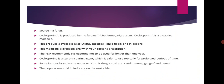The source of Cyclosporine is a fungus. Cyclosporine A is produced by the fungus Trichoderma polysporum and is a bioactive molecule. This product is available as solutions, liquid-filled capsules, and injections, and is available only with a doctor's prescription. The FDA recommends cyclosporine not be used for longer than one year. It is a steroid-sparing agent which is safer to use topically for prolonged periods, generally used in psoriatic conditions.